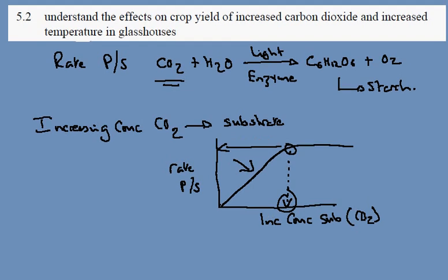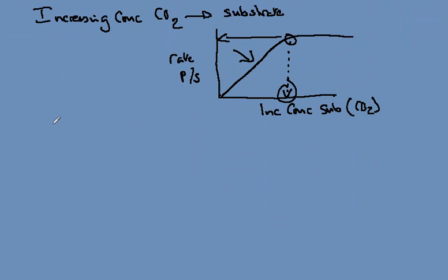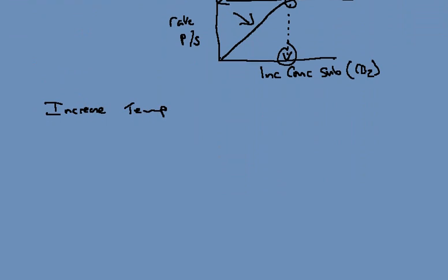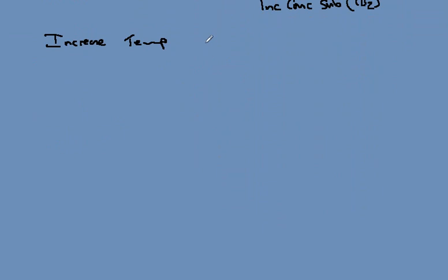If we then go on to look at the effect of temperature. So if we increase the temperature, then this time we can look at another familiar graph which looks like this. And on this axis here we have the rate of photosynthesis again. So that's how quickly we're making the sugar. And on this one here we've got temperature, perhaps in degrees centigrade. And the theory predicts this kind of asymmetrical graph.